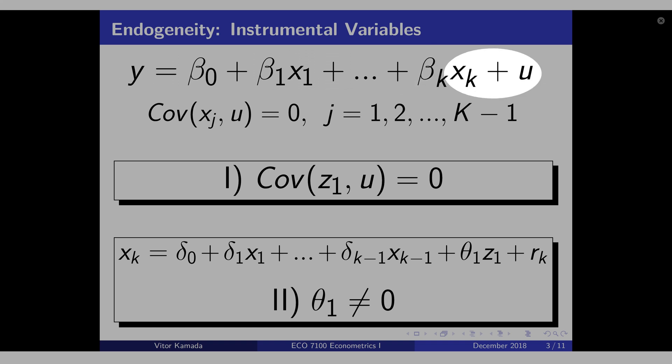The logic is xk is correlated with the error term, but the xk hat is not correlated with the error term. The intuition here is that the IV will generate xk hat that is uncorrelated with the error term. Because the IV, z, by itself, is uncorrelated with the error term.